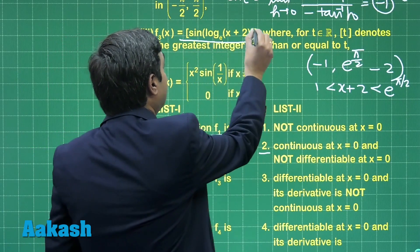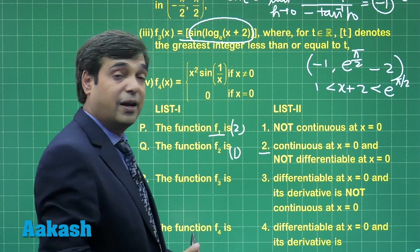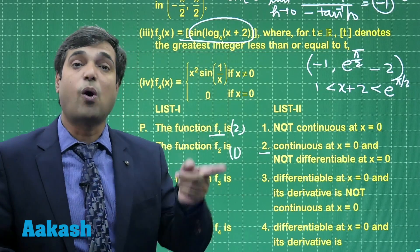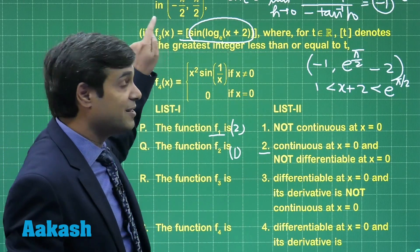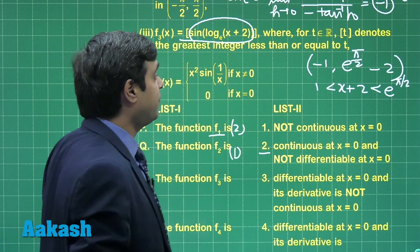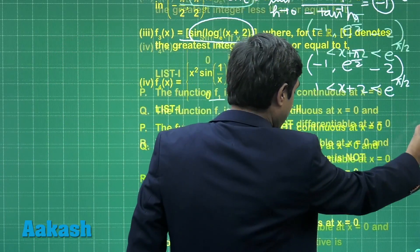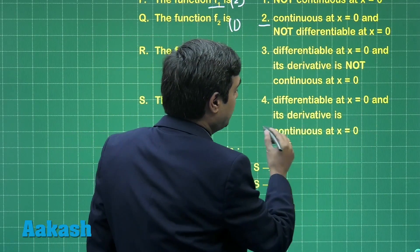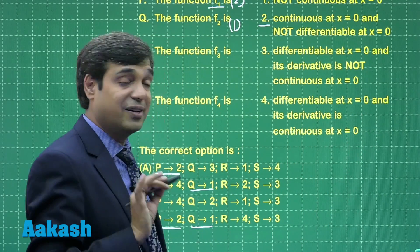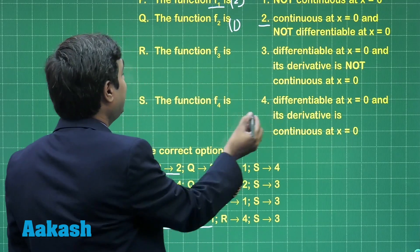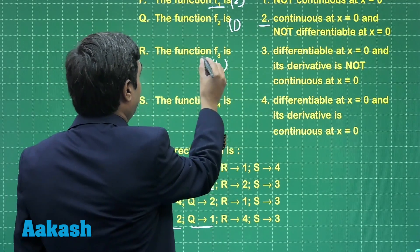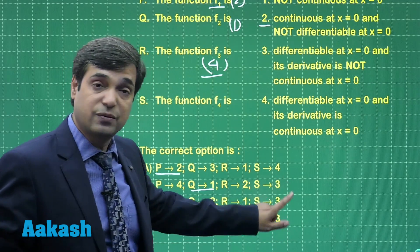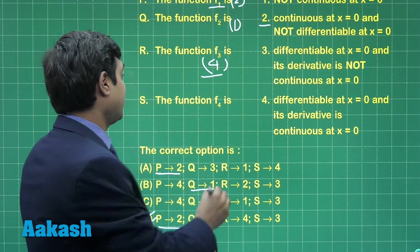Sin function is lying between 0 and 1. Greatest integer of a number which is between 0 and 1 is always 0, meaning this function is continuous as well as differentiable everywhere. For this one, we get the function is differentiable at x equals 0 and its derivative is also continuous at x equals to 0, meaning fourth, which we had already concluded for r as fourth. Similarly for s, that will give me 3.